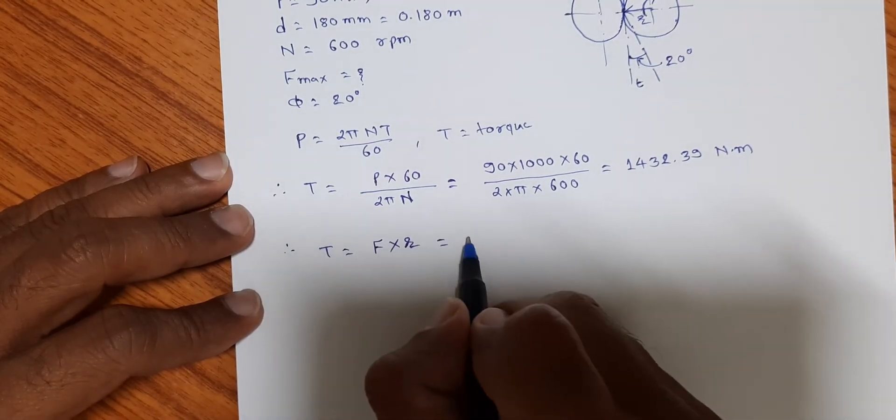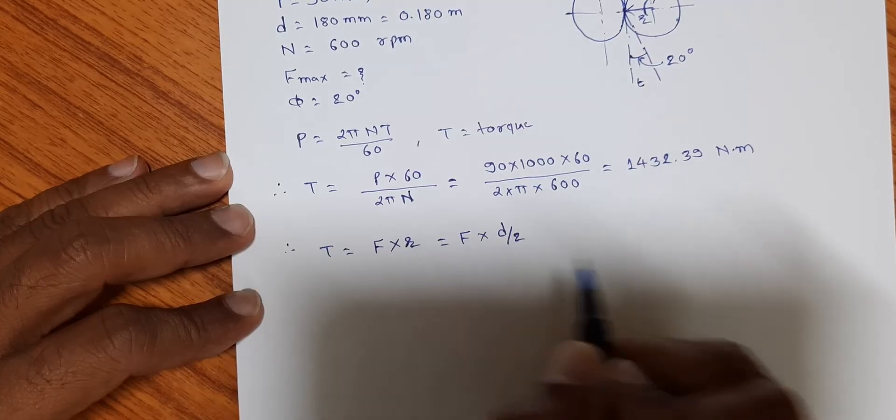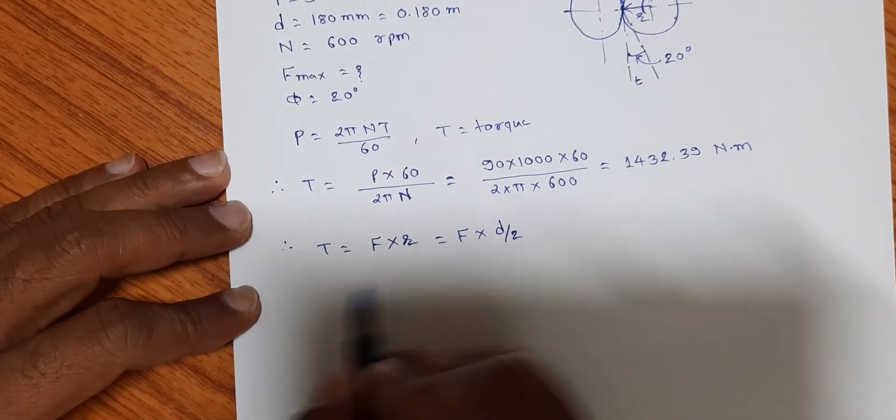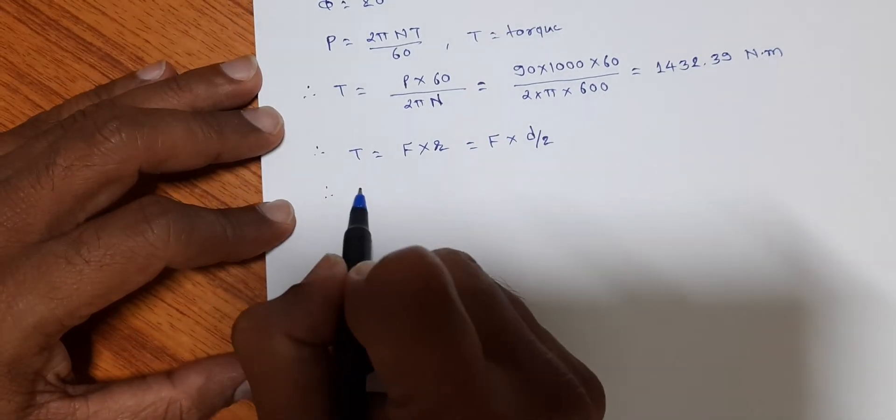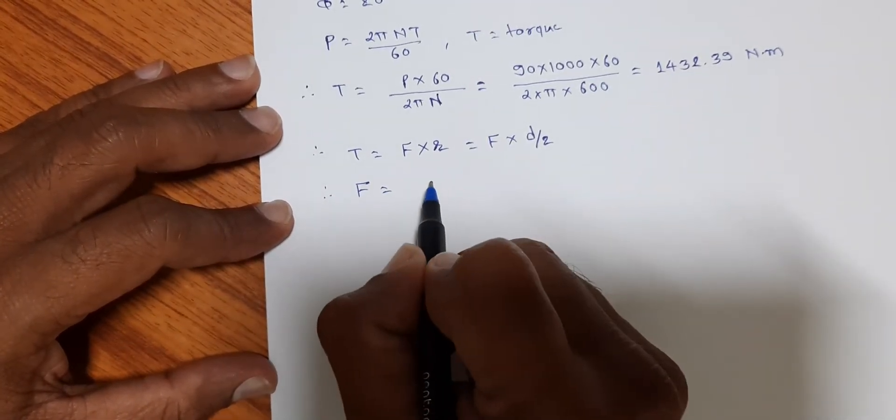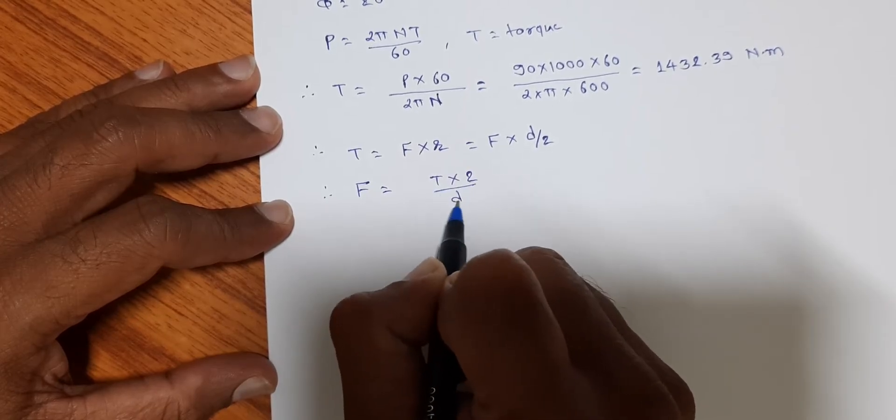So torque is equal to, we can write, F into d by 2. And hence the force acting F is equal to T into 2 divided by d.